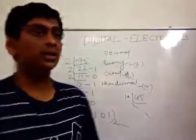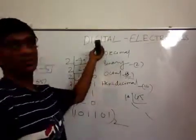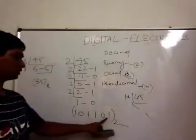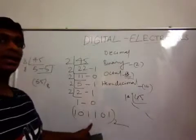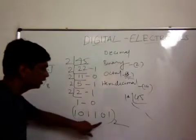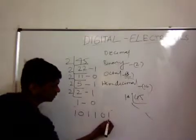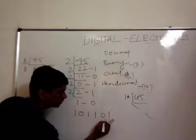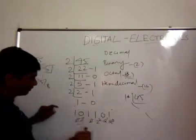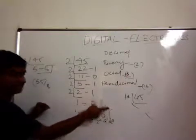When converting any number of a given radix to decimal, for example I have 101101 in binary and I have to convert it to decimal, I use positional weights. The radix is 2, so positions from right to left are 2 power 0, 2 power 1, 2 power 2, 2 power 3, 2 power 4, and 2 power 5. I multiply each digit by its positional weight.